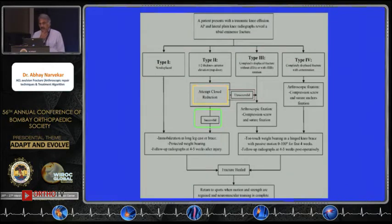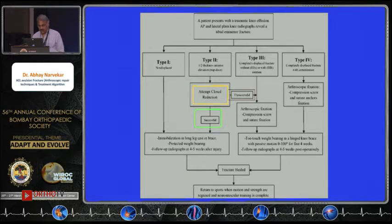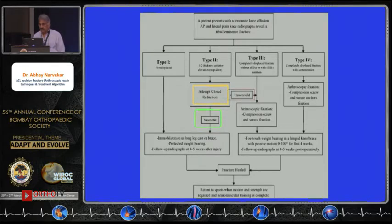The treatment algorithm: Type 1 is managed conservatively — immobilize in a long knee brace, protect weight bearing, and with follow-up radiographs start mobilizing over four to six weeks. Type 2, the trap door, should first have a closed reduction attempted. If successful, follow the Type 1 protocol. If unsuccessful, proceed to arthroscopic fixation as in Type 3 management.